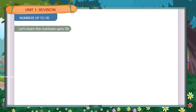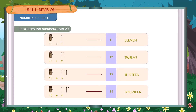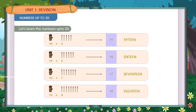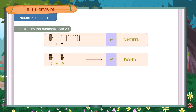Let's learn the numbers up to 20. 10 plus 1 is equal to 11. 10 plus 2 is equal to 12. 10 plus 3 is equal to 13. 10 plus 4 is equal to 14. 10 plus 5 is equal to 15. 10 plus 6 is equal to 16. 10 plus 7 is equal to 17. 10 plus 8 is equal to 18. 10 plus 9 is equal to 19.